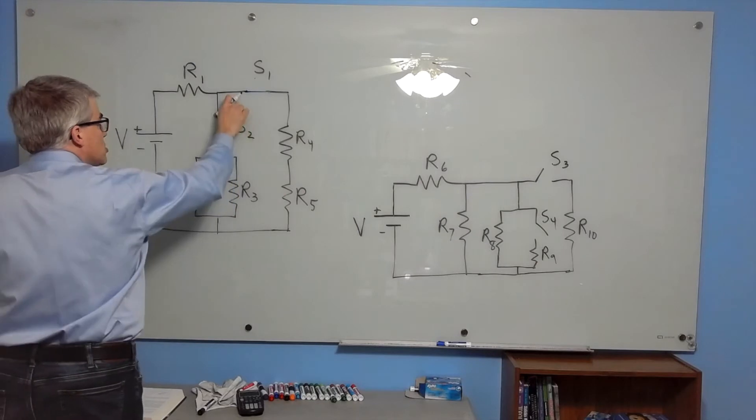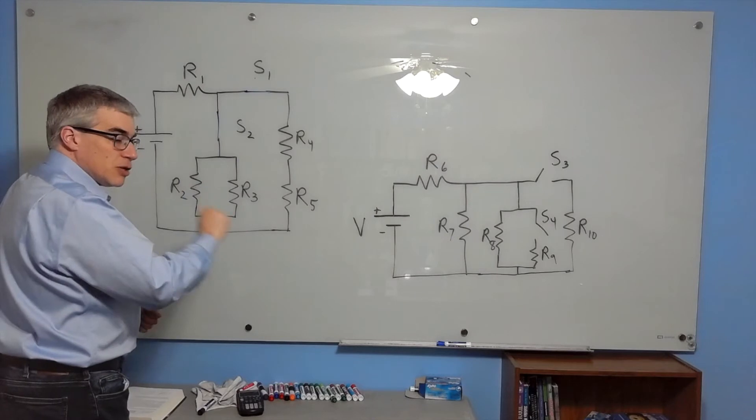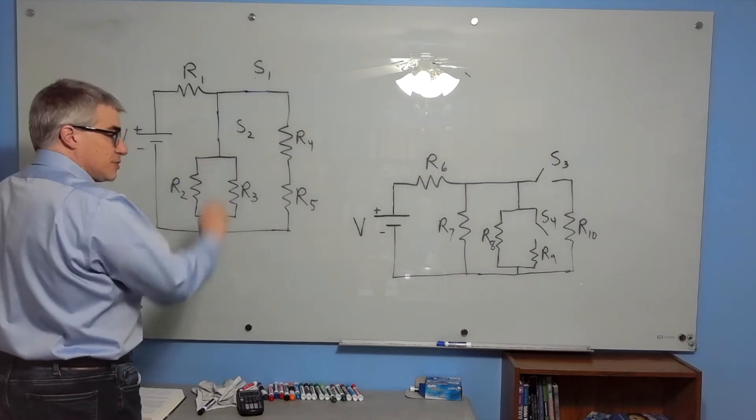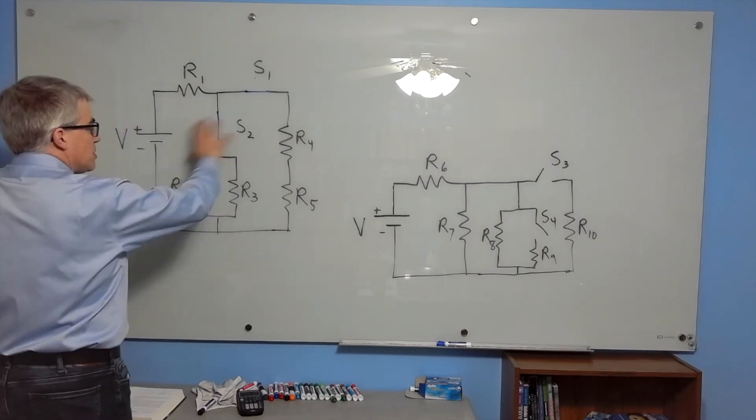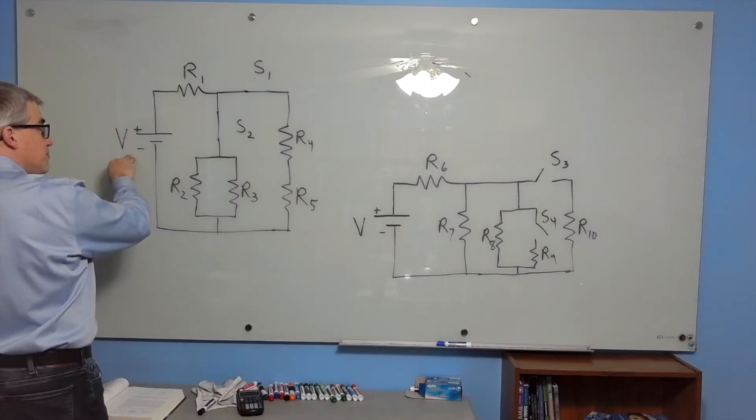If we then close switch two, we have added more paths, so the total resistance must go down. If there's more paths, resistance goes down. As a result, with less resistance overall, there's more current coming out of the battery. R1 gets brighter.